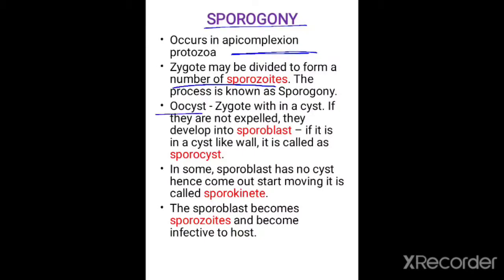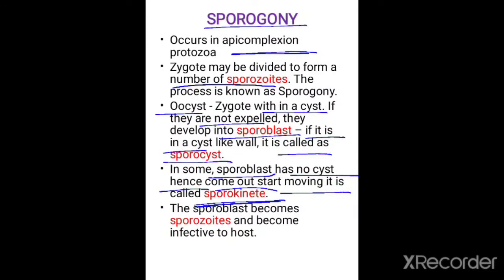An oocyst is a zygote with a cyst wall. If they are not expelled, they develop into a sporoblast; if covered by a cyst-like wall it is called a sporocyst. The oocyst is the zygote within the cyst which develops into sporoblast, and the sporoblast can develop into a sporocyst. If the sporoblast has no cyst wall it comes out and moves — it is called a sporokinete. The sporoblast becomes sporozoites, which are the infective stage to the host.